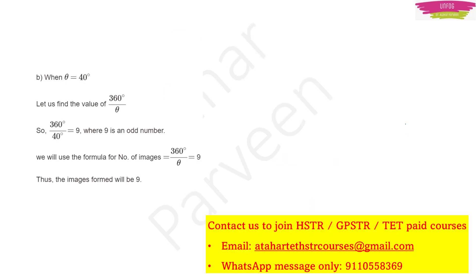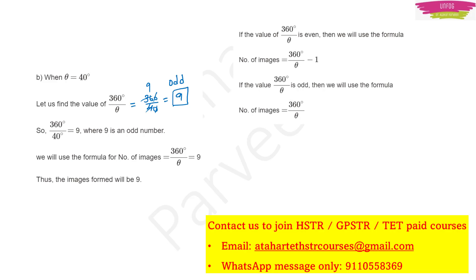Another example: if θ = 40°, calculate 360/40. The zeros cancel, giving 36/4 = 9, which is an odd number. Since it is odd, I will not subtract 1 — number of images = 9 as it is. So the number of images formed is 9.